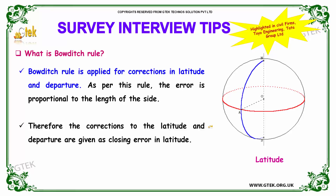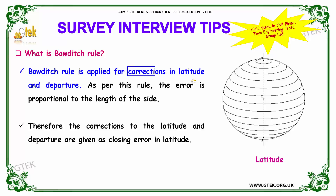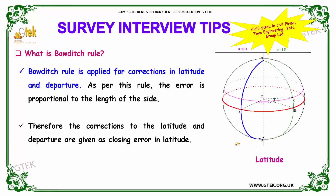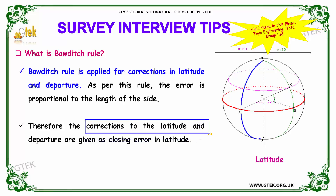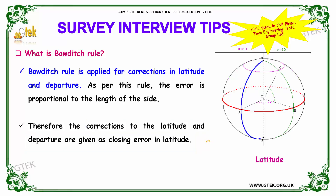Our next question is: what is Bowditch rule? The Bowditch rule is applied for corrections in latitude and departure. As per this rule, the error is proportional to the length of the side. Therefore, the corrections to latitude and departure are given as the closing error in latitude.